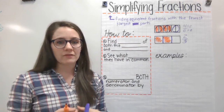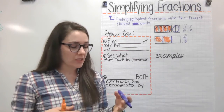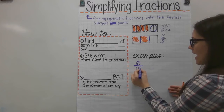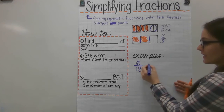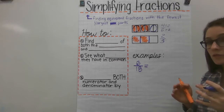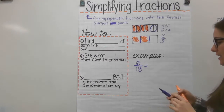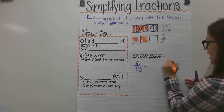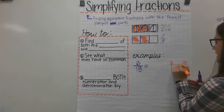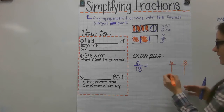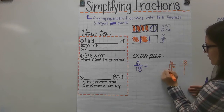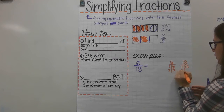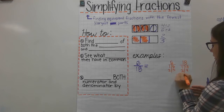So now let's talk about how to do that for any fraction. For example, if I have the fraction 6/18 and I want to find a simplified equivalent fraction, I need to think about the factors of 6 and the factors of 18. The factors of 6 are 1 and 6, and also 2 and 3. The factors of 18 are 1 and 18, 2 and 9, and 3 and 6.